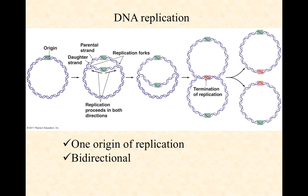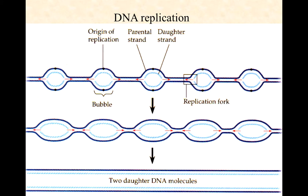Replication happens in both directions. If you imagine a double-stranded DNA with two strands twisted together, as you pull them apart they go in opposite directions around the circle. Replication proceeds at these junctions we call replication forks — the spots where double-stranded DNA is becoming two single-stranded DNA strands. They wrap all the way around the circle until they hit a terminator sequence, which causes all the proteins to fall off and the two identical daughter strands to separate.